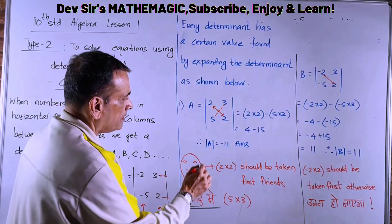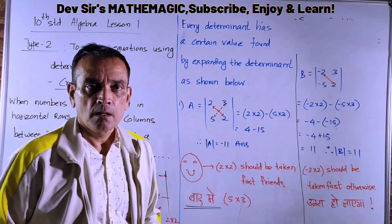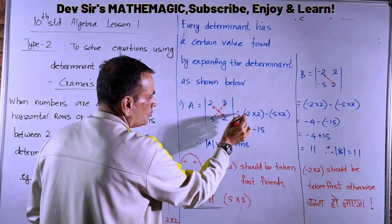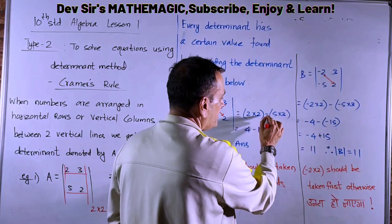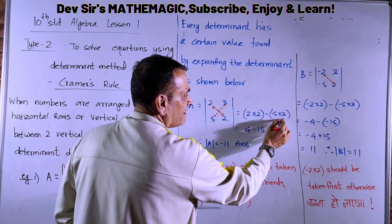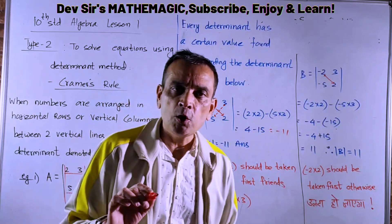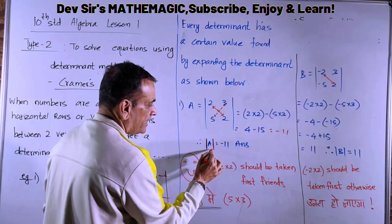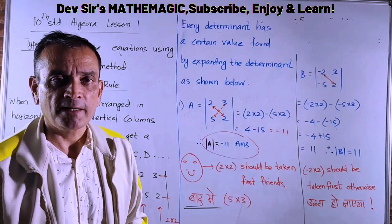To calculate the value, you have to cross multiply. The solid line numbers are taken first, the dotted line next, with a minus sign between them. For example: 2 into 2 minus 5 into 3. That gives 4 minus 15, which equals minus 11. So the value of determinant A is minus 11. That is how you find the value of a determinant.